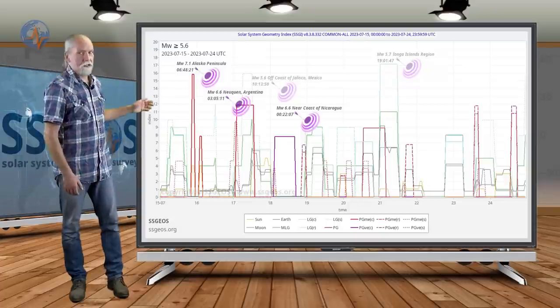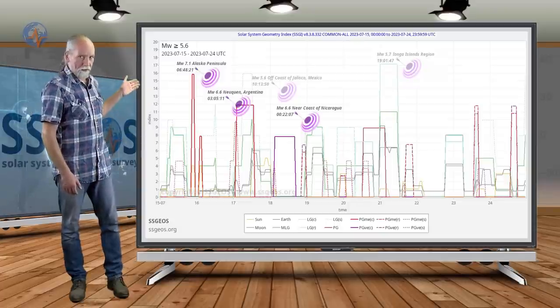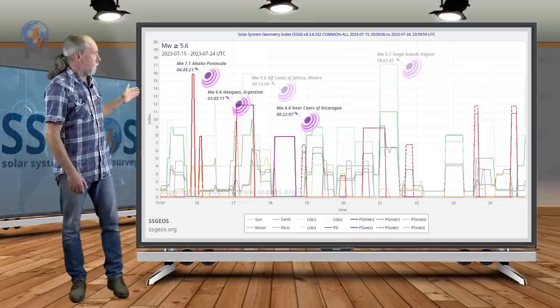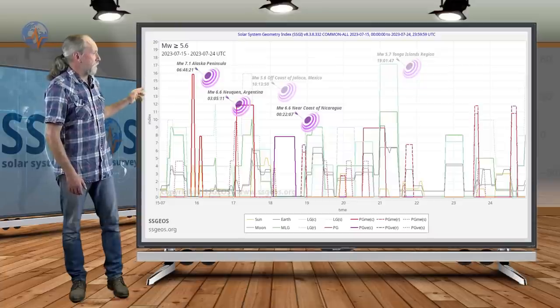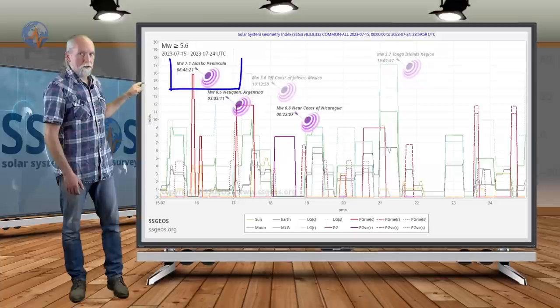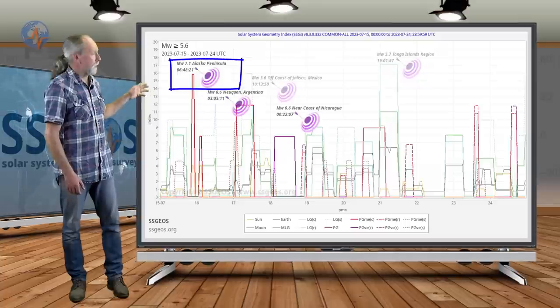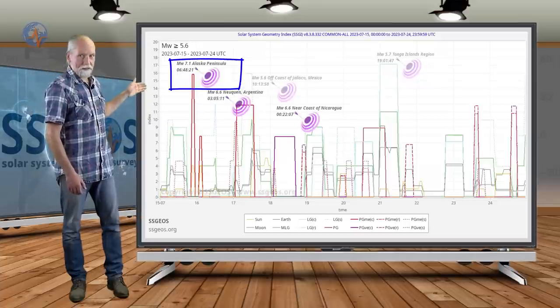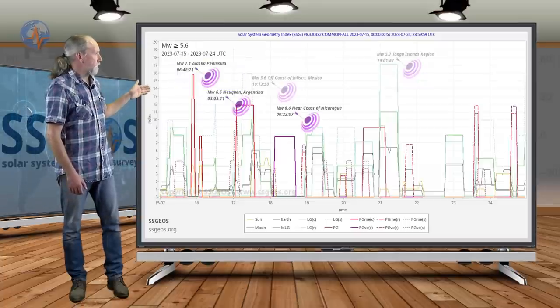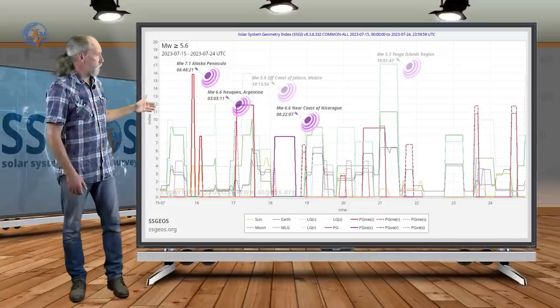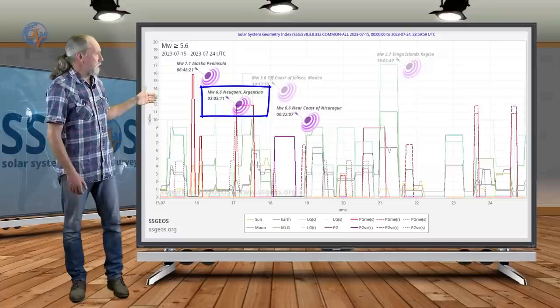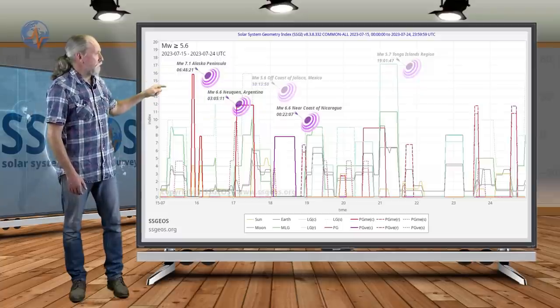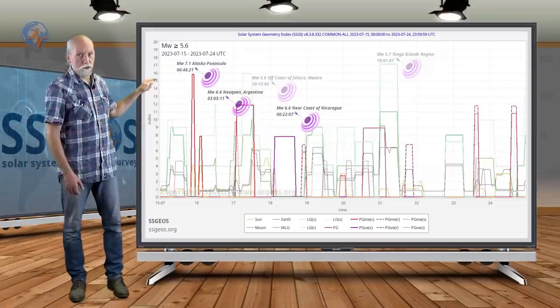We see the red peaks—this is the planetary geometry, the planetary conjunctions that we had on the 15th and 16th. It was immediately followed by a measured 7.1 to 7.2 earthquake at the Alaska Peninsula. Then on the 17th, a planetary conjunction and we see a 6.6 in Argentina, and then another 6.6 occurred after the planetary conjunction with Venus.